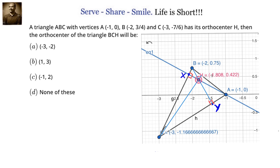We need to calculate the orthocenter of triangle BCH. We will apply the same logic and draw altitudes from each vertex to the opposite side. From H, we draw a perpendicular to BC. That will be nothing but the altitude drawn earlier, because A and H are on the same line — they are collinear. So the altitude from A to BC and the altitude from H to BC are the same line. That altitude is AX.